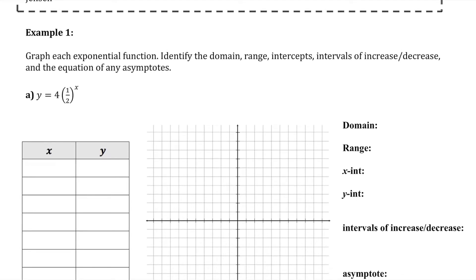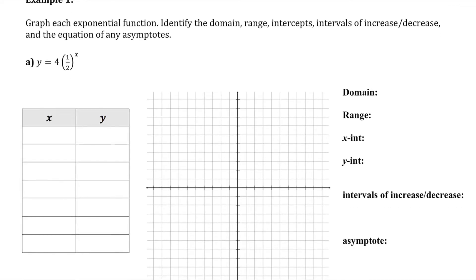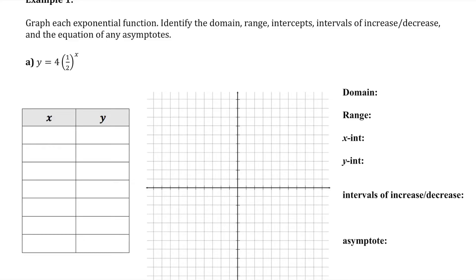Let's start with example one where it asks us for all that information for the function y equals four times a half to the power of x. In order to state all that information it would be useful if we figured out what the graph of this function looks like, so let's make a table of values so that we can graph it.